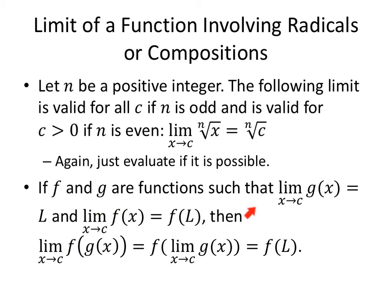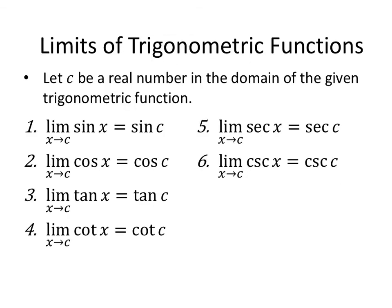If F and G are functions such that the limit as X approaches C of G of X equals L, and the limit as X approaches C of F of X equals F of L, then the composition works out. The limit can move into the composition in order to evaluate. Trigonometric functions. We evaluate sine, cosine, tangent, cotangent, secant, cosecant, as long as C is in the domain to find the limit we just evaluate.